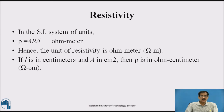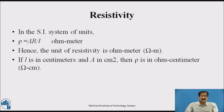In the SI system, the unit for resistivity can be derived from the equation ρ = (Area × Resistance) / Length, and it equals ohm·meter. Hence, the unit of resistivity is ohm·meter. If length is in centimeters and area in square centimeters, then the unit of ρ will be ohm·centimeter.